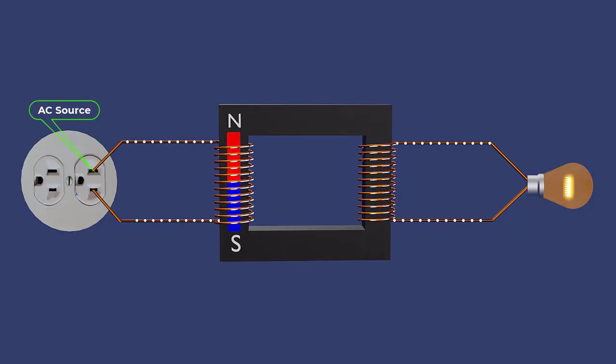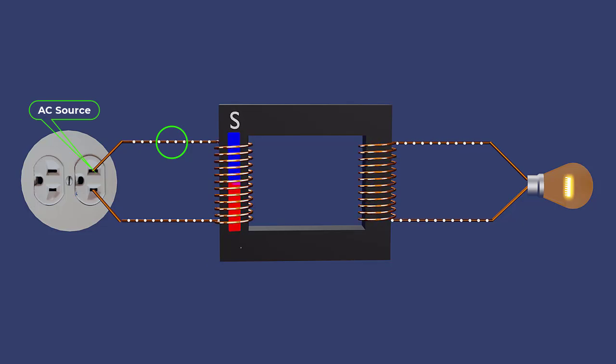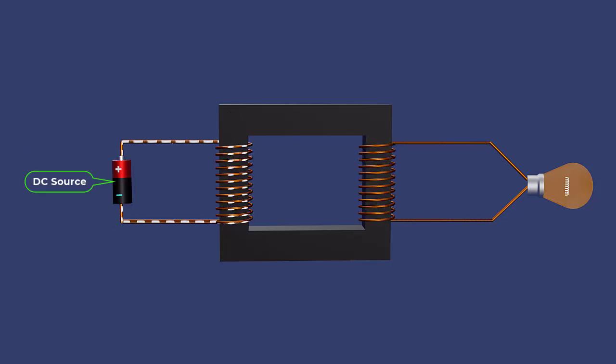Transformers only work with alternating current and are incompatible with direct current. When the primary winding is connected to a DC source, it generates a constant magnetic field in the core. A constant magnetic field cannot induce voltage in the secondary coil.